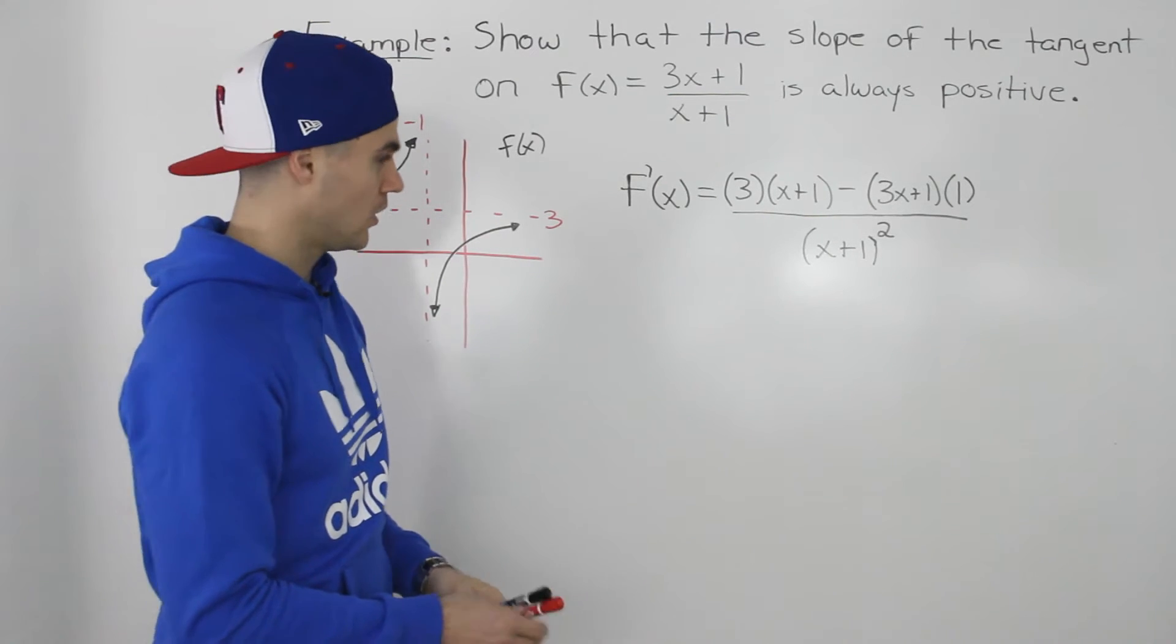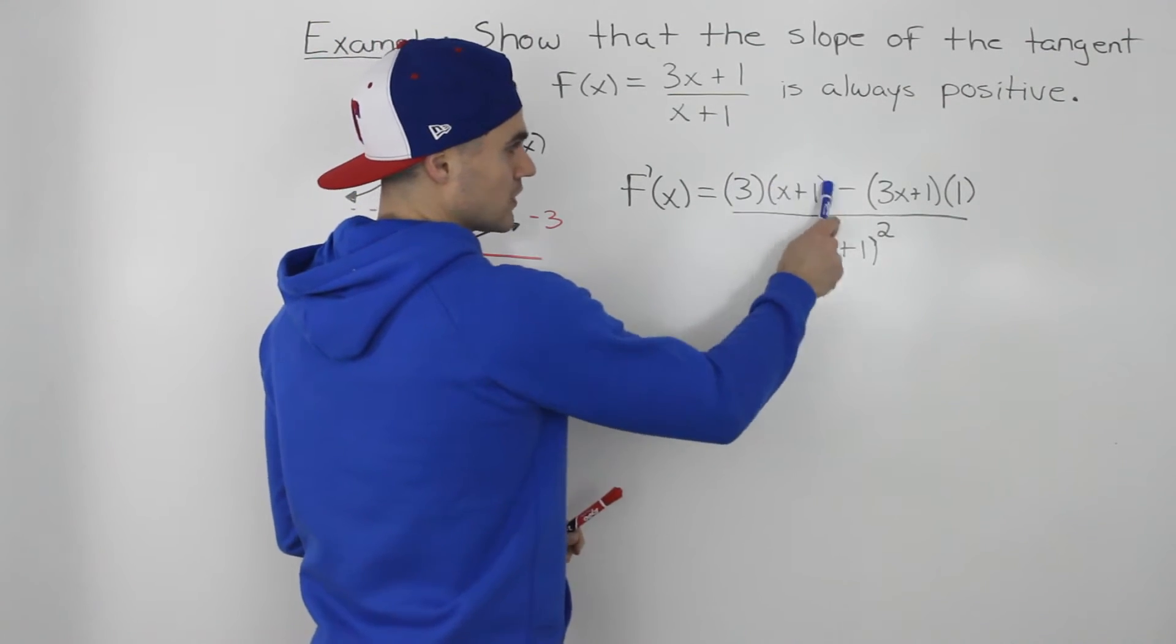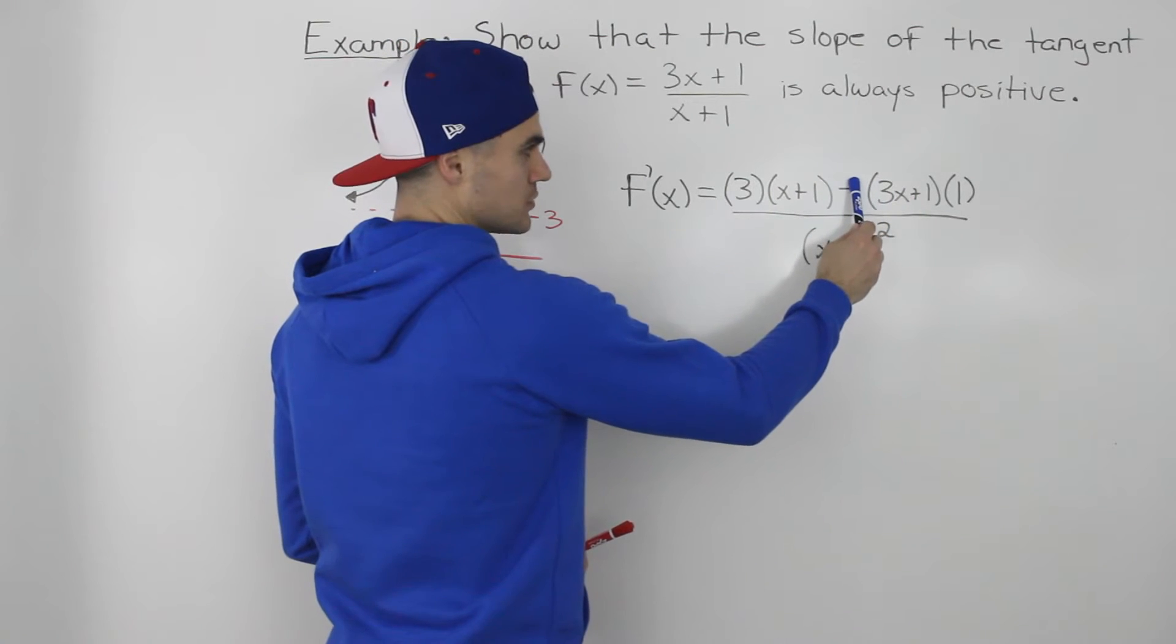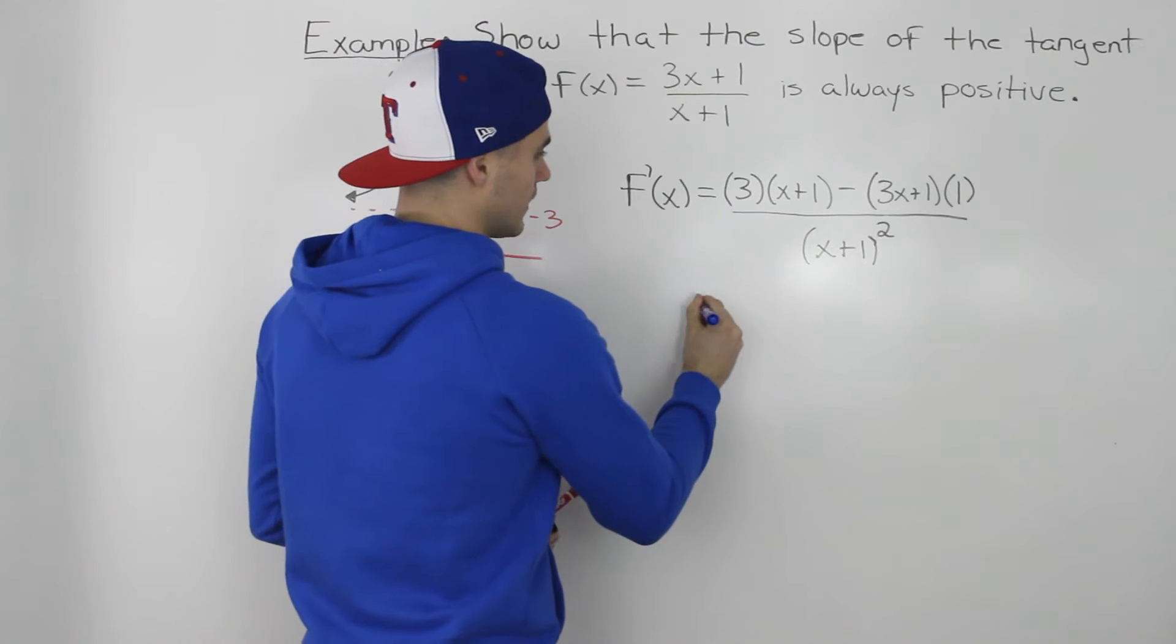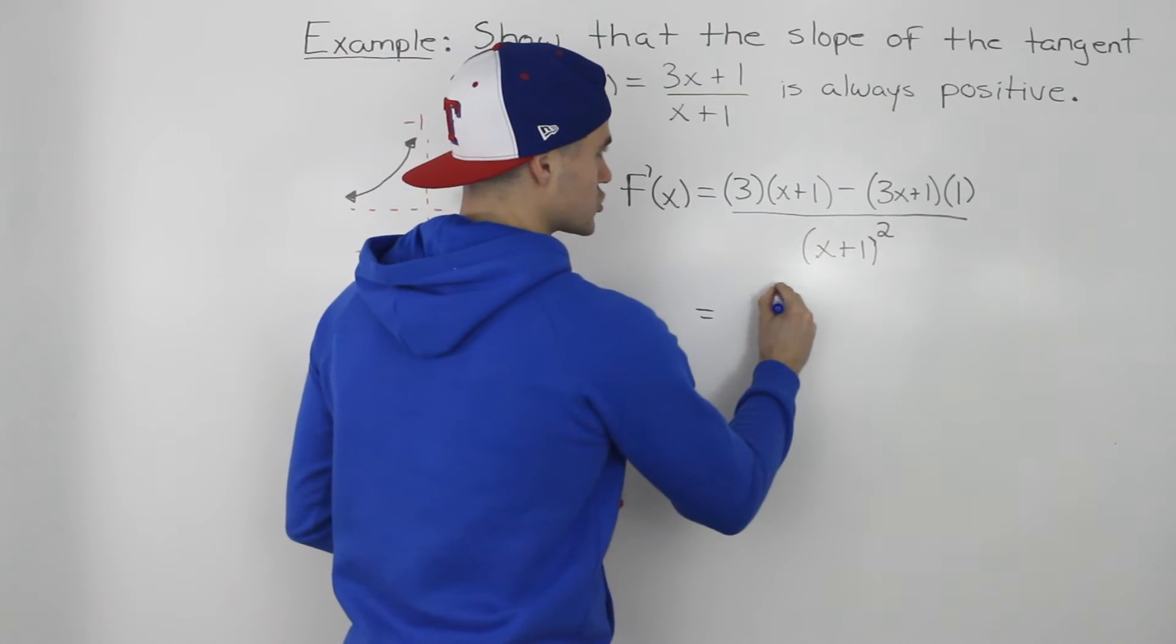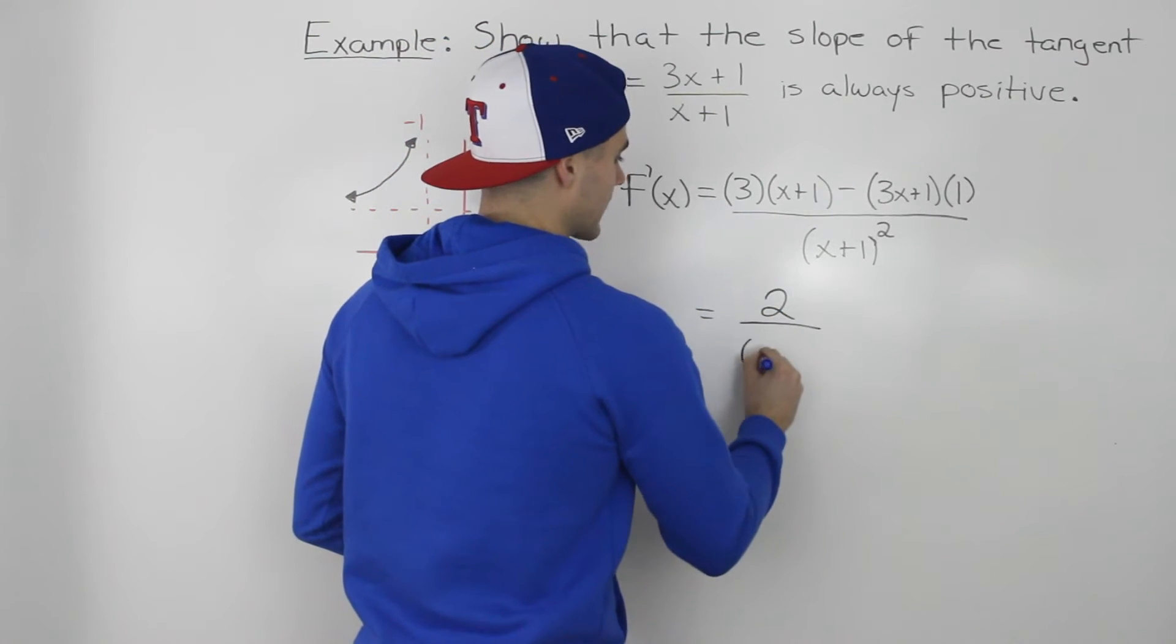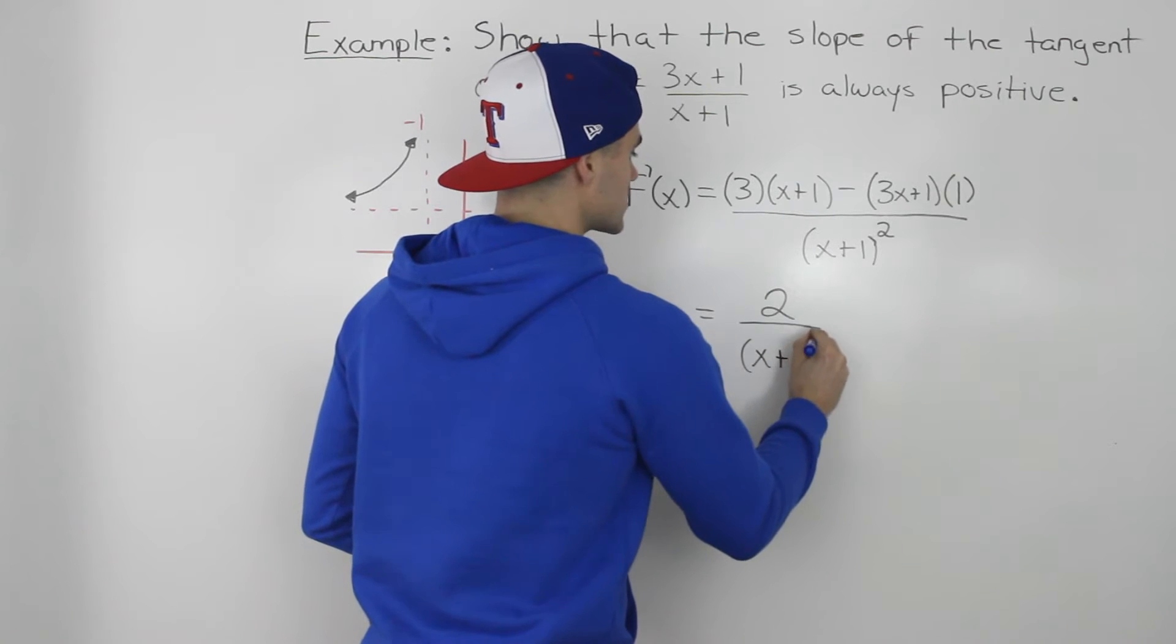So what will happen here, if we distribute the 3 inside this bracket, and then distribute this negative 1 inside the bracket, the 3x's will cancel out, and we'll just be left with 2 over (x+1) squared.